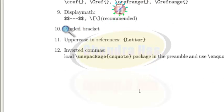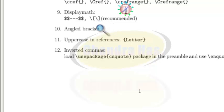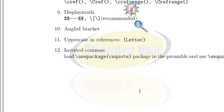For display math, there are three ways. The first option uses double dollar signs. The second option uses a backslash with square brackets, which is always recommended. The third option uses \begin{displaymath} and \end{displaymath}.